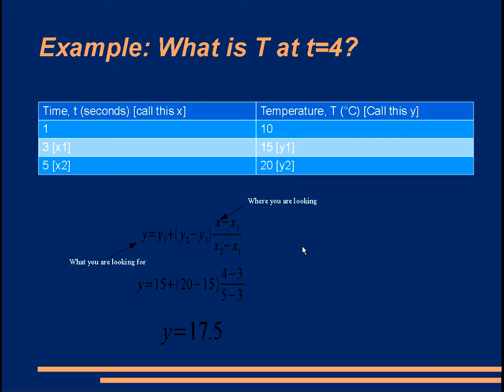Just to see that you've got this principle, maybe try two quick examples. Find T at t equals 1.5. You have to relabel this and use these two points. If you do that correctly, you should get the answer 11.25.